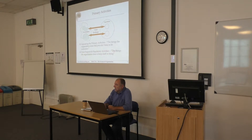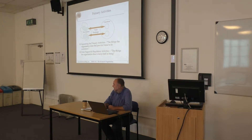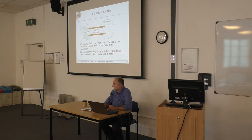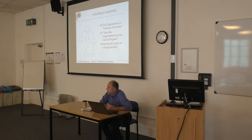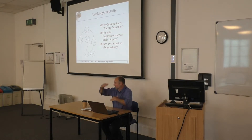It starts with circles, which are the operations — the primary activities of the organisation. We're trying to separate those out from everything else the organisation does to keep itself in being. So this is about the things the organisation does that provide value to the external environment. For a business school like this, doing research is primary, teaching is primary, running the building is not. In modelling, you break that down level by level, or build it up level by level.